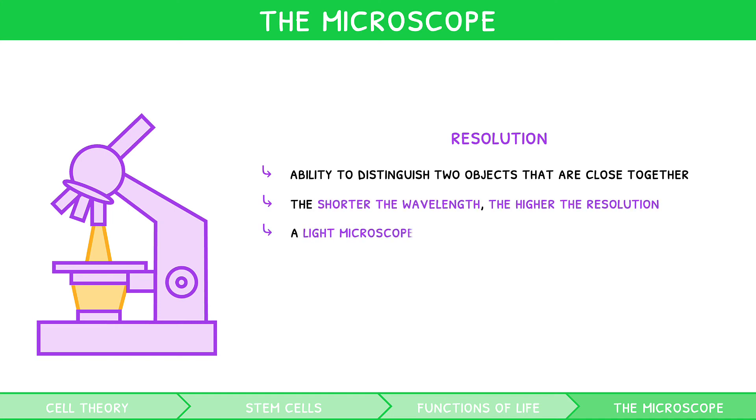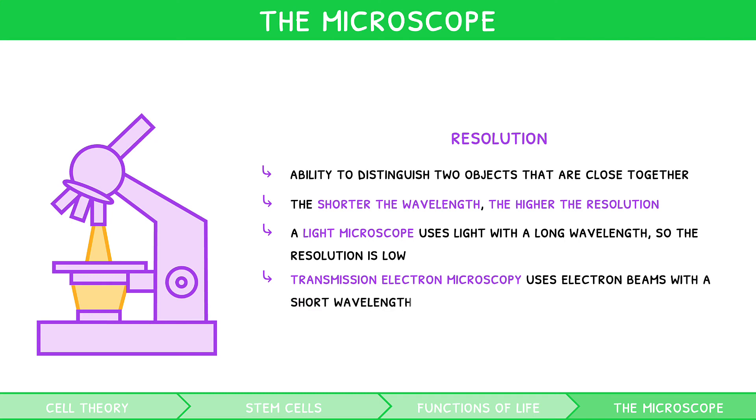In a light microscope, like this one, it is done using light, which has a long wavelength, so the resolution is low. Transmission electron microscopy is an alternative approach that uses electron beams instead, which have a short wavelength, producing a much higher resolution.